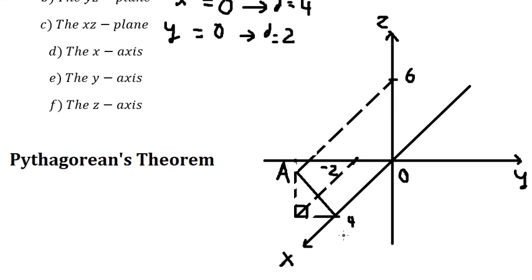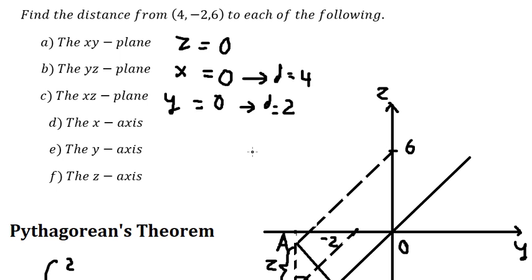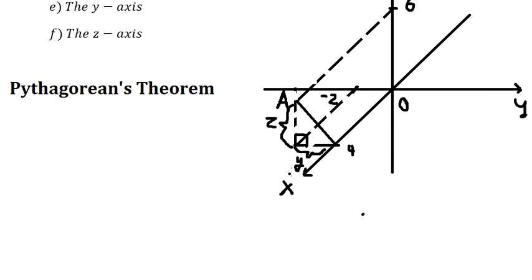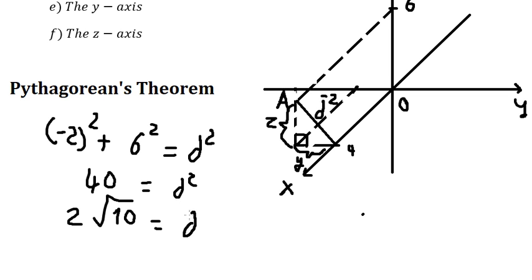For the first one, we can see that this is the y value and this is for the z value. So we have y equals negative two and z equals six. We calculate this and get the distance d. So we put the square root of both sides and that is about two with the square root of ten. This is for d.